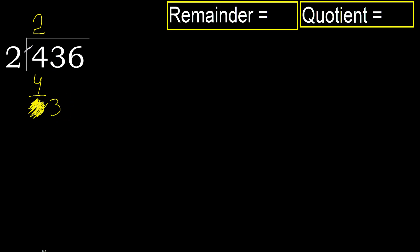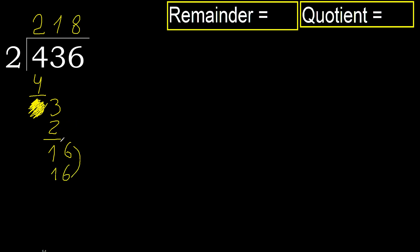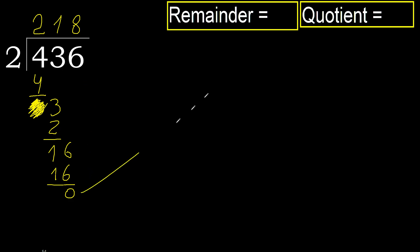2 multiplied by 2 is 4 — greater. Try 1. 2 multiplied by 1 is 2, not greater. Subtract. Next, bring down 6: 16. 2 multiplied by 8 is 16, not greater. Subtract: 16 minus 16 is 0. No next number, therefore finish.